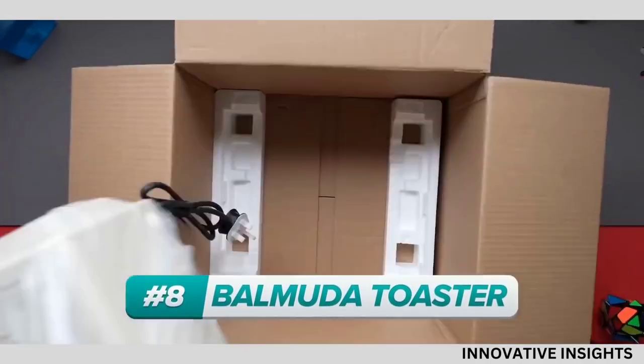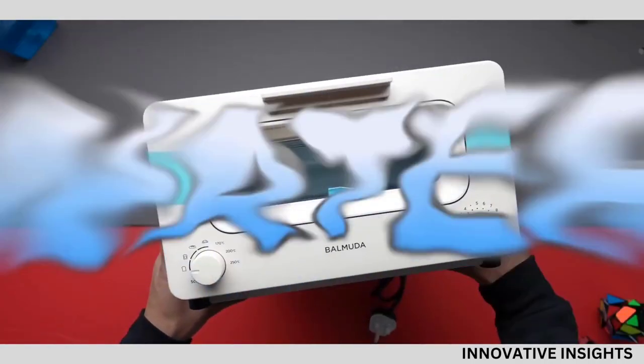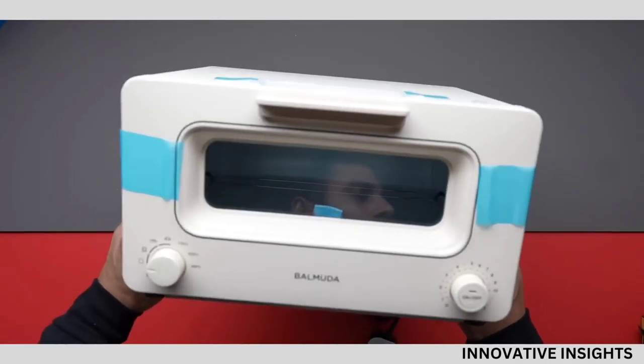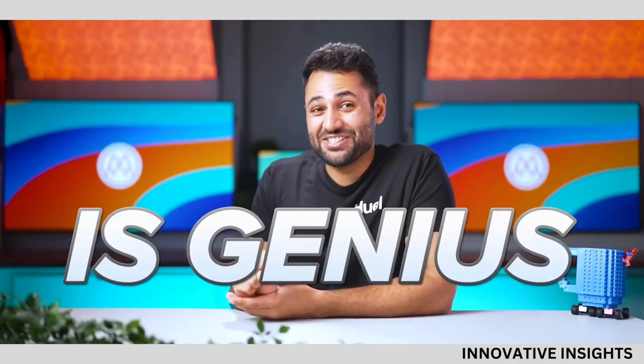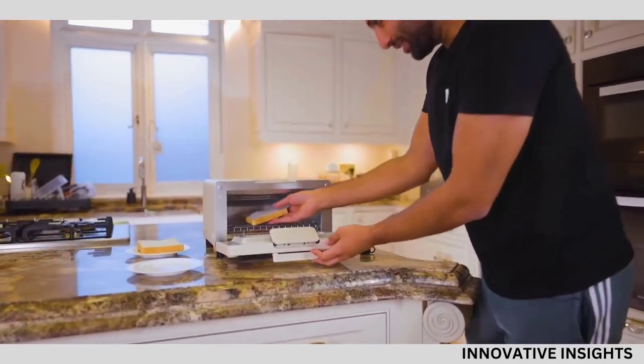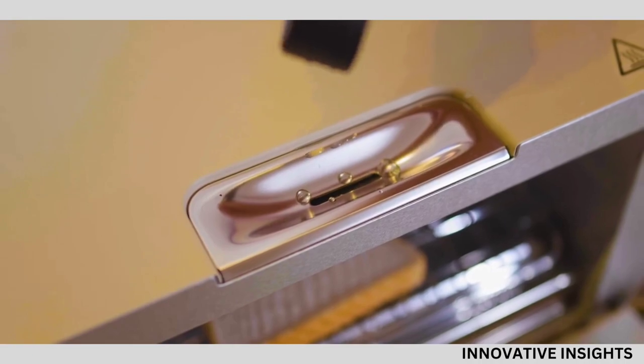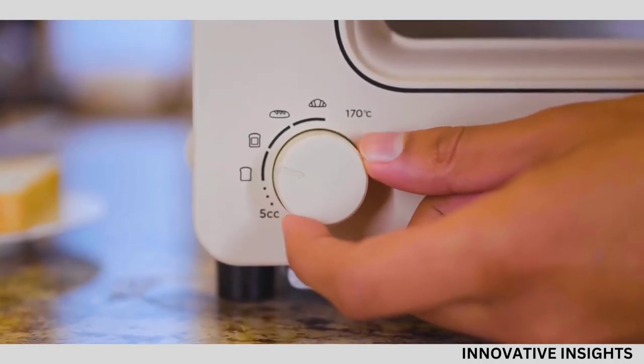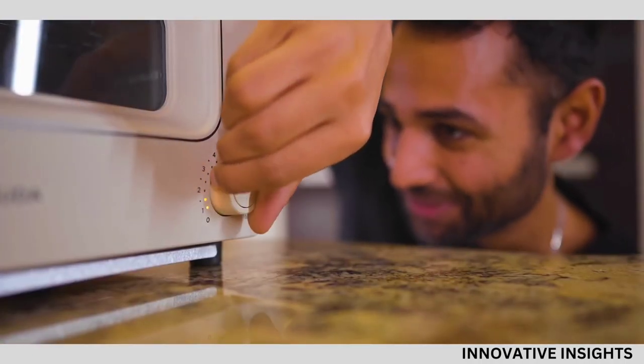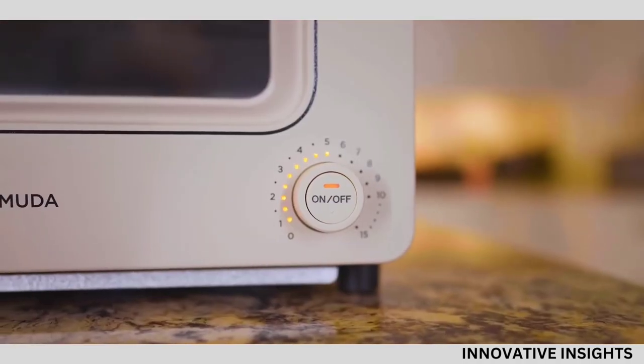This is the $300 Balmuda toaster and it toasts your bread using water. This is not a TikTok life hack gone wrong, this is genius. So it should just be a case of popping the bread inside, adding the water with this adorable little cup, choosing the type of bread that I'm toasting and then setting the timer. Very pleasant bit of engineering.